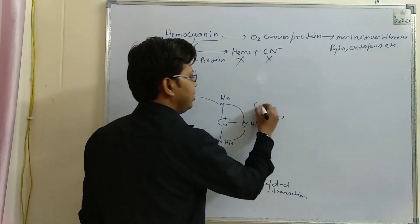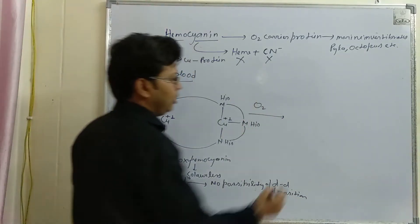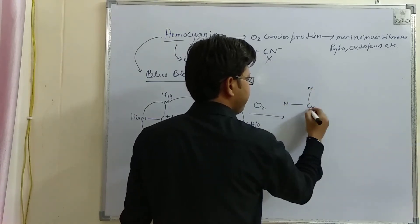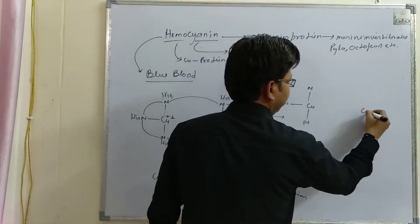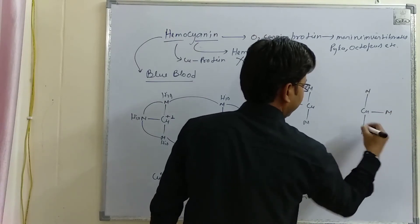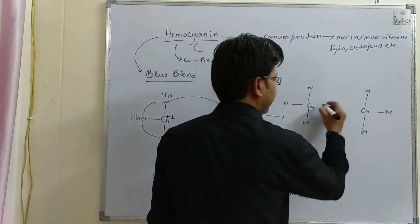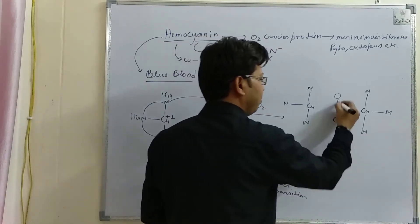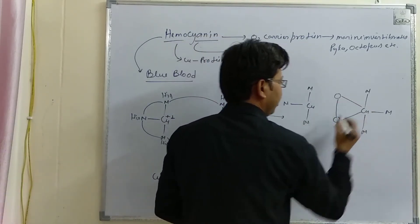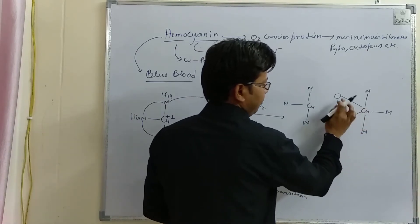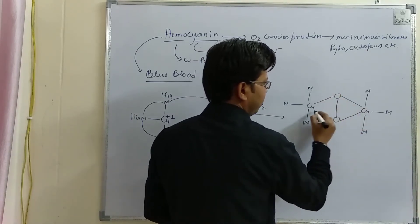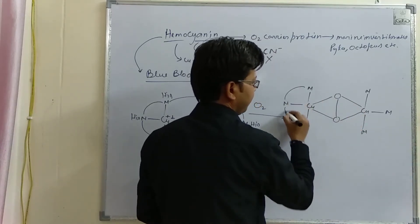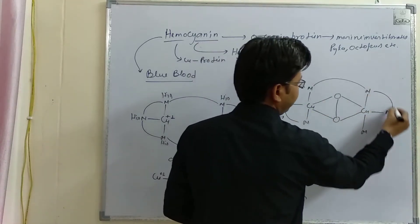When oxygen binds with the hemocyanin, the one bond of the dioxygen molecule is broken and one oxygen atom is coordinated with both the copper atoms.